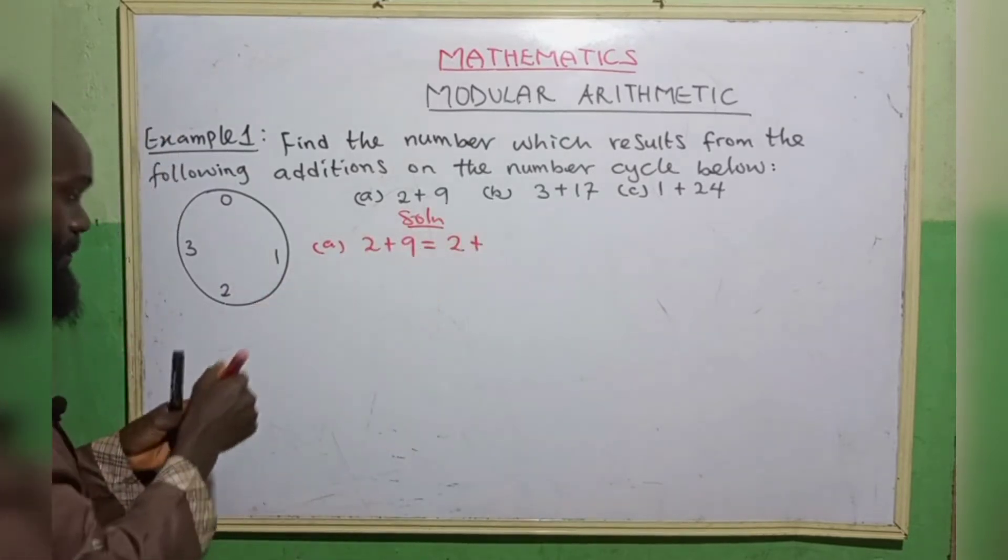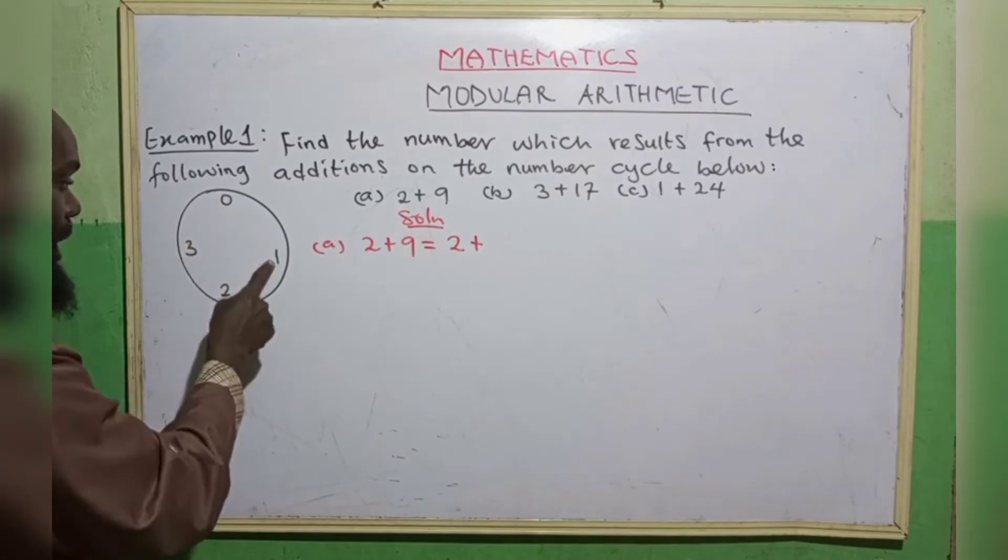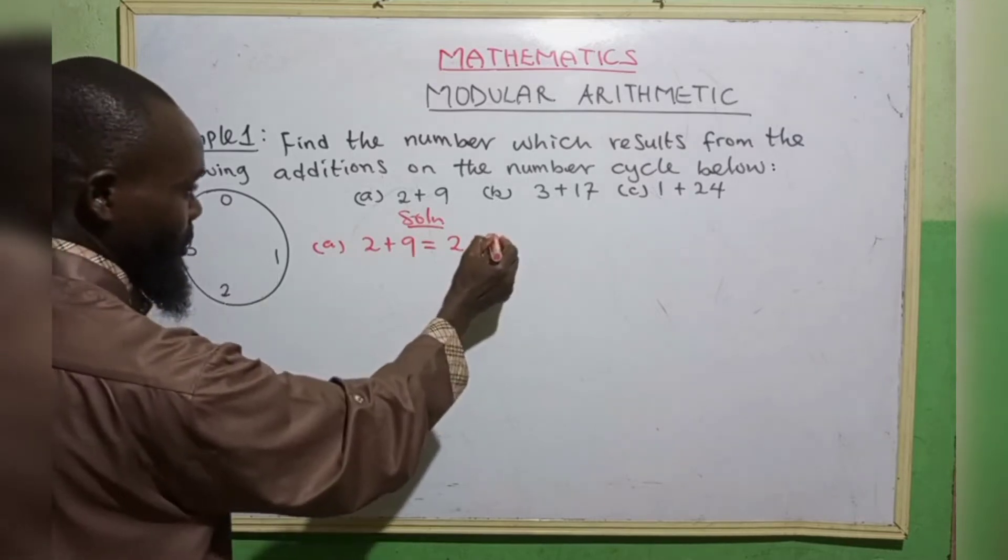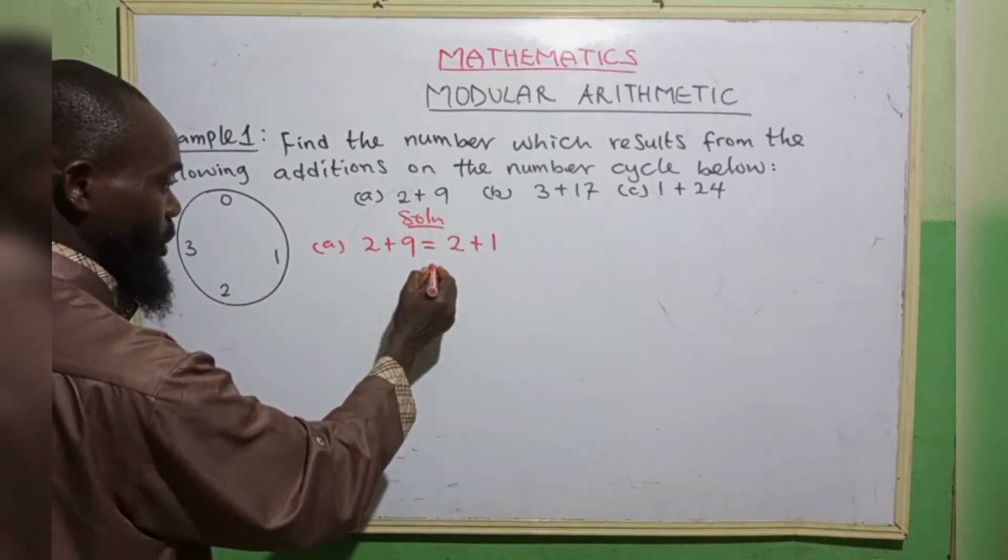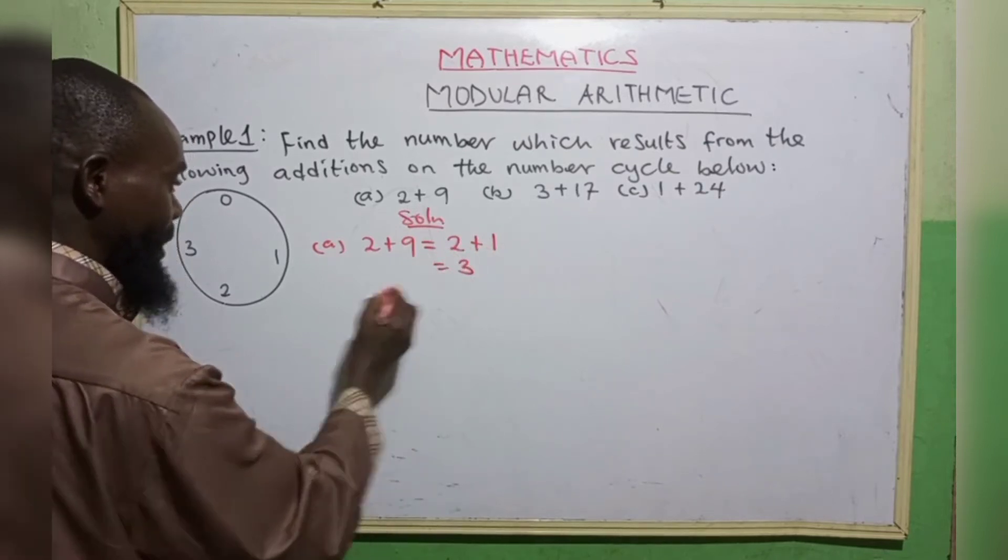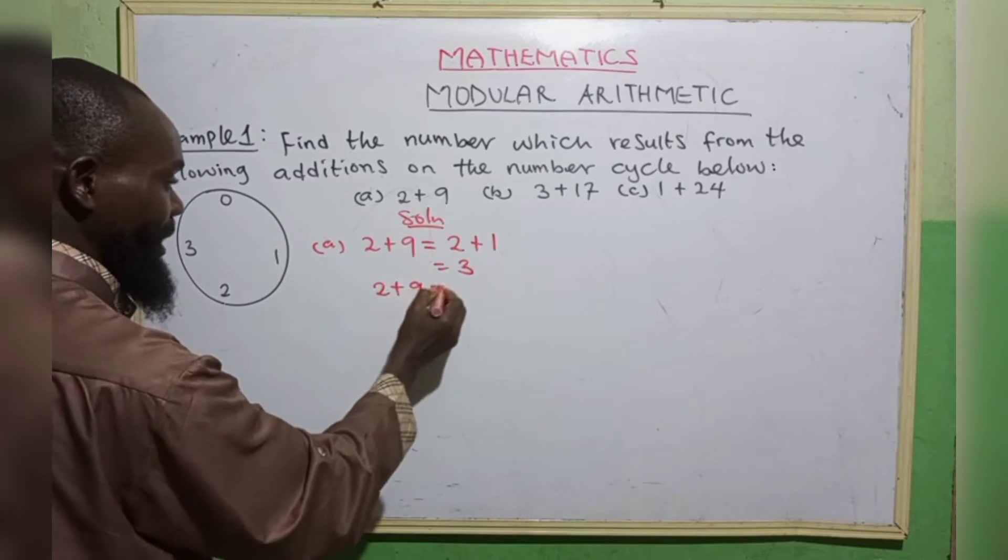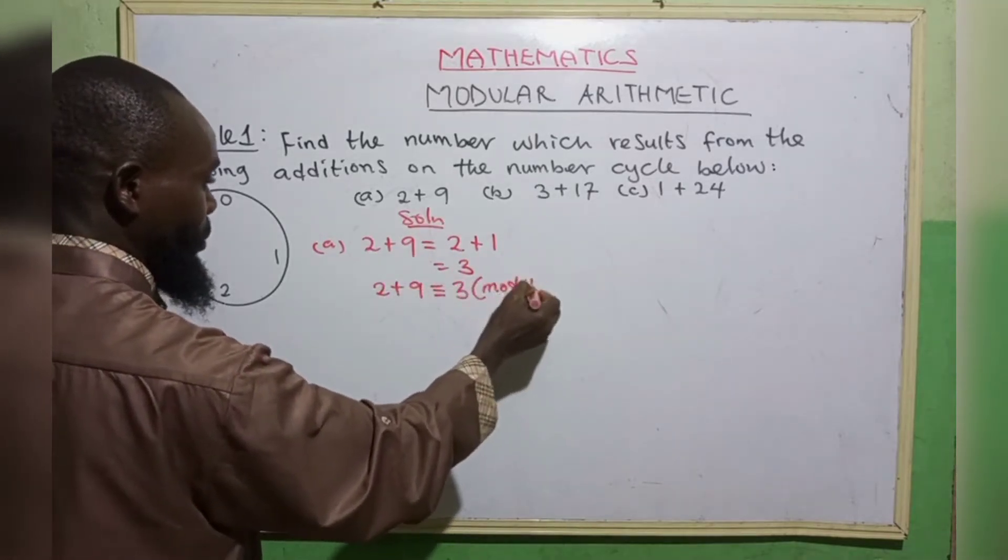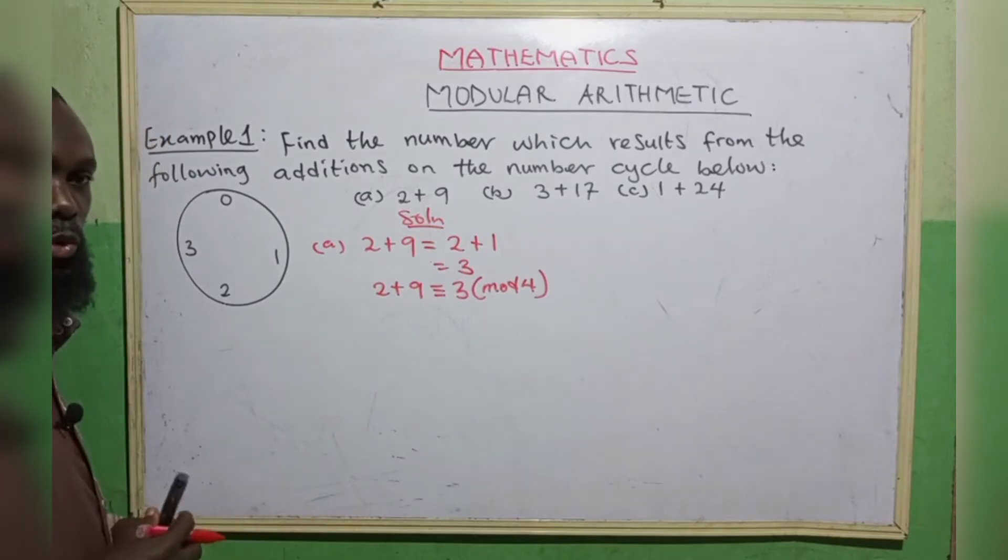Plus then 9. This is 0, 1, 2, 3, 4, 5, 6, 7, 8, 9. Equivalence to 1. So 2 plus 3 is equal to, 2 plus 2 plus 1 is equal to 3. Meaning that 2 plus 9 is equivalent to 3 in modulo 4.